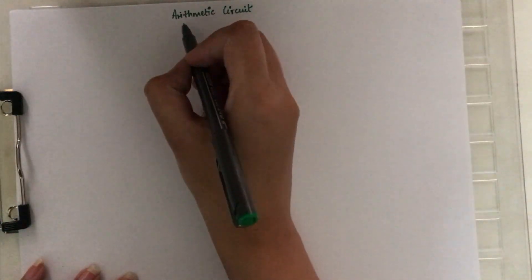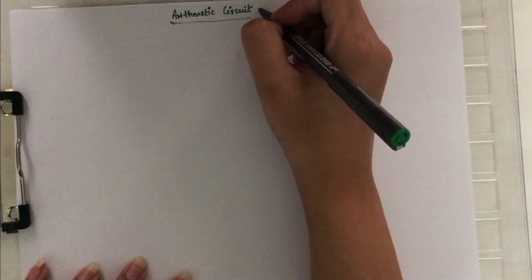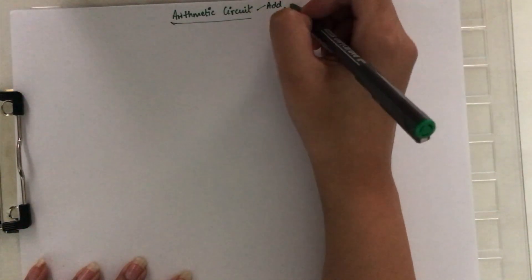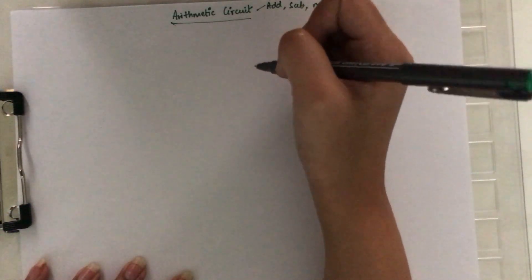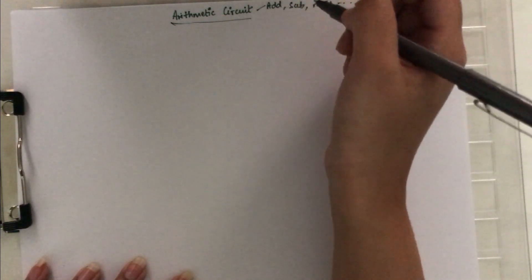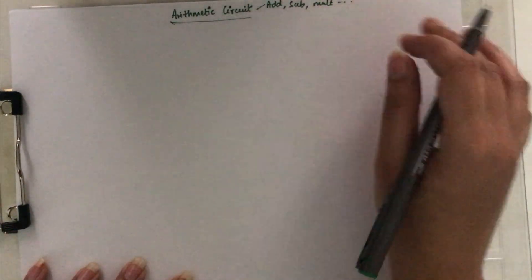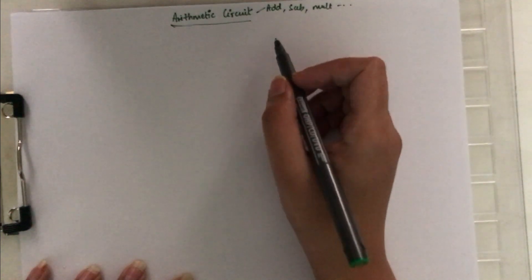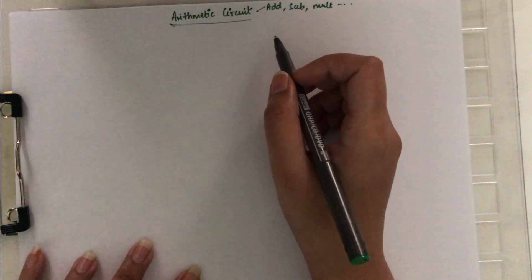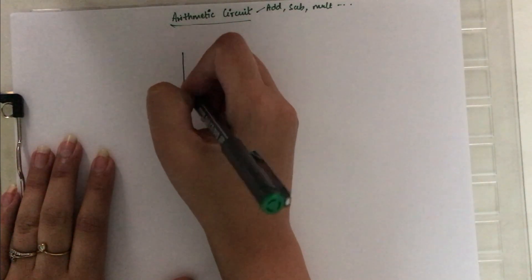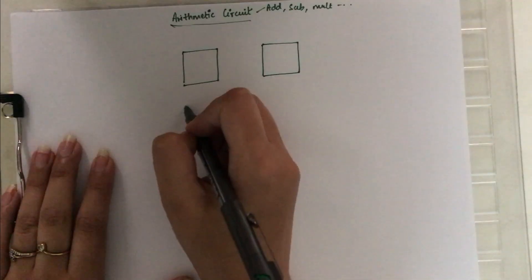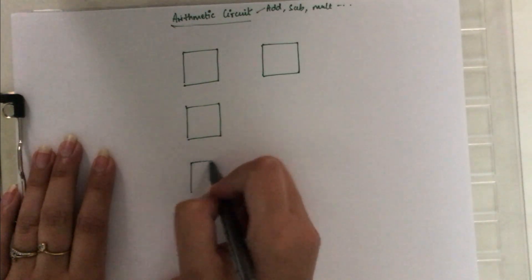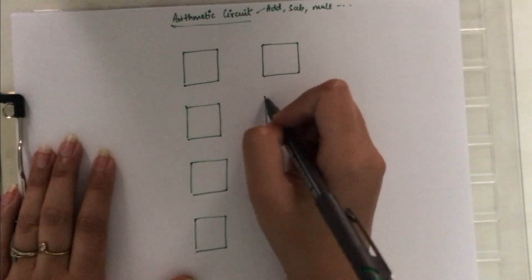The topic for today's video is arithmetic circuits. Arithmetic micro-operations consist of operations such as add, subtract, multiply, and so on. What we are going to learn in this video is how arithmetic micro-operations can be implemented by means of a single arithmetic circuit. To make this circuit, we need multiplexers and full adders — specifically four multiplexers and four full adders.